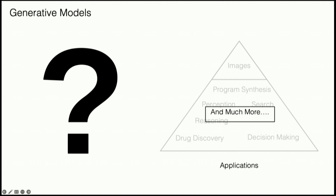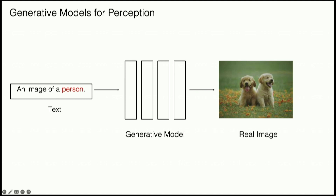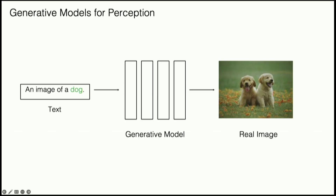Now I'll talk about a couple of these applications in more detail. First, let's consider using generative models for perception — essentially understanding images you see on a day-to-day basis. Imagine you have an image of two dogs. You can take one of these text-to-image models and input a sentence like 'an image of a person,' and it will synthesize an image. You can see the extent to which the synthesized image matches the real image. If your text is incorrect — like 'an image of a cat' — you can't really synthesize the real image. But when you specify the correct object, 'an image of a dog,' you can correctly generate the image. This gives you a method to take an image of the real world and infer whatever subject is inside it.